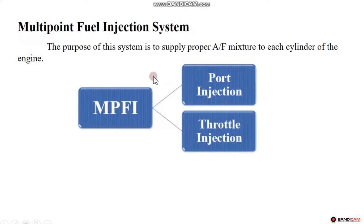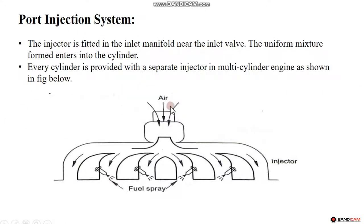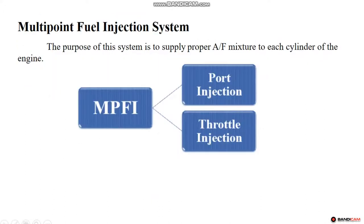The first type is the multi-point fuel injection system. Single point is the carburetor injection. Now we are going to talk about the multi-point. Multi-point has two types — one is port injection and one is throttle injection.